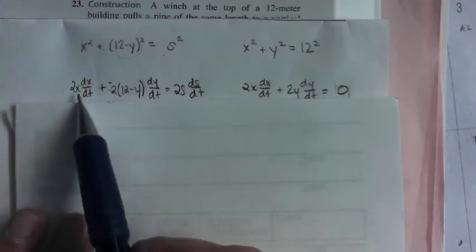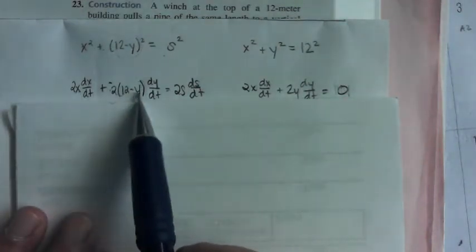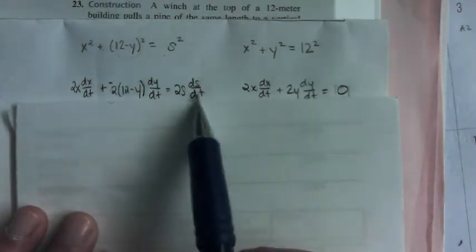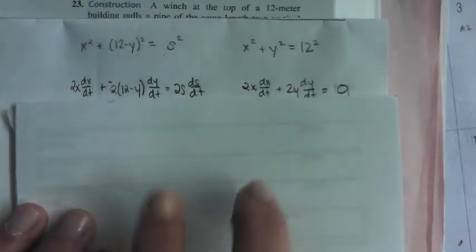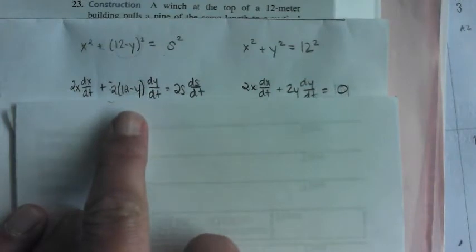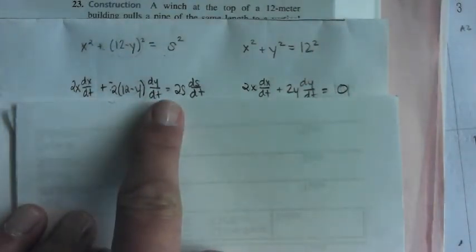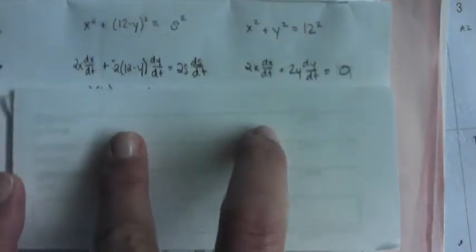And at the moment, I know X values, I know Y values, and I know S and DS DT. So in both equations, I'm going to have an unknown DX DT and an unknown DY DT. But everything else I know.